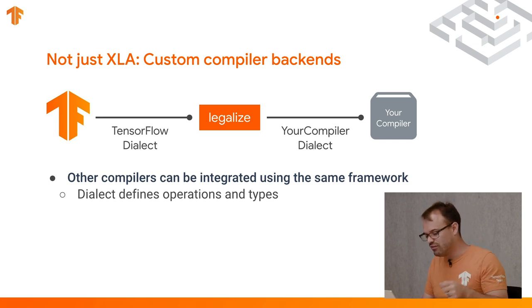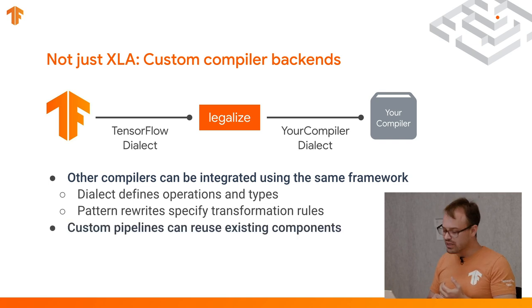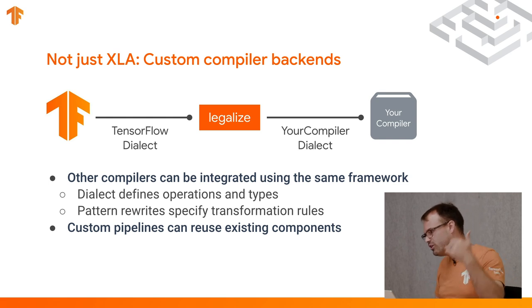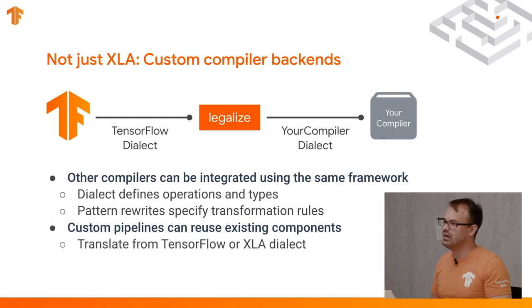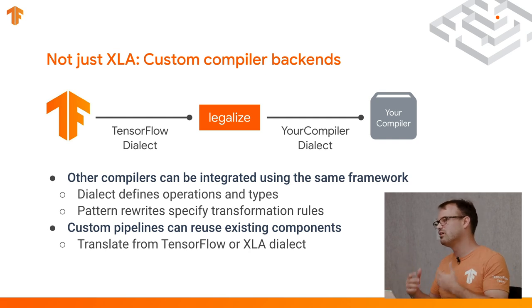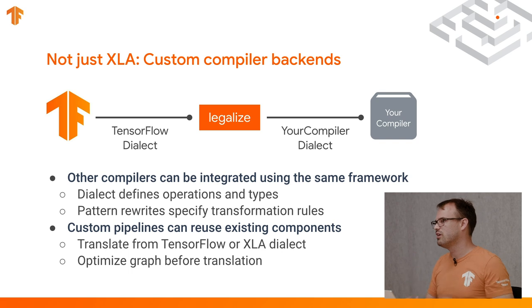Beyond that, we don't want it to be just XLA-specific. Looking at custom compiler backends, we want to make it easy for other compiler frameworks to integrate into TensorFlow in a unified way — dialect compilers can have their own dialect. Dialects can integrate into the same framework: you define your operations and types, and you have the pattern rewrites specifying the transformations you need to target your backend. It also means that custom pipelines can reuse existing components. One of MLIR's goals is to be a reusable set of compiler passes.